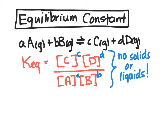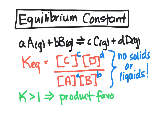The value of K can tell us really important things about the equilibrium. If K is greater than 1, looking at our expression, it means that we'll have more products than reactants at equilibrium, and we would call that a product-favored equilibrium. If K is less than 1, the denominator would be larger, meaning that we have more reactants, and that would be a reactant-favored equilibrium.